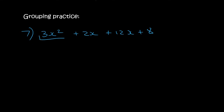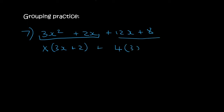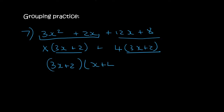In the first two terms we could take out x and then you'd be left with 3x plus 2. In the second two terms you could take out a 4 and you'd be left with 3x plus 2 — a nice easy one. Since 3x plus 2 is the same in both, we take it out, and then we're simply left with x plus 4. Neither of those brackets can go any further, so that's the answer.